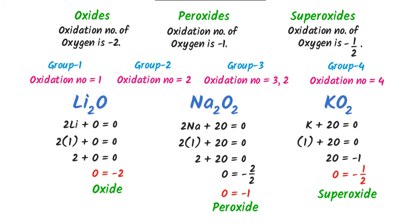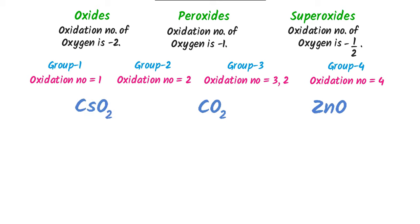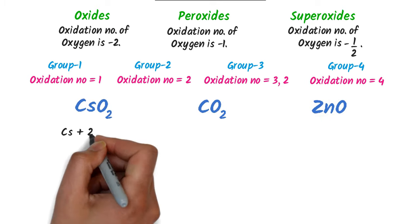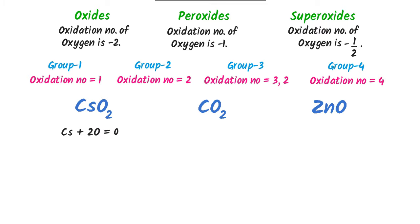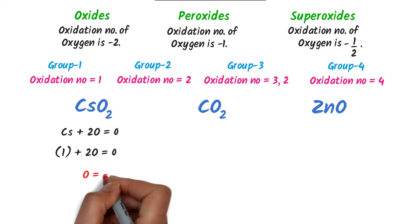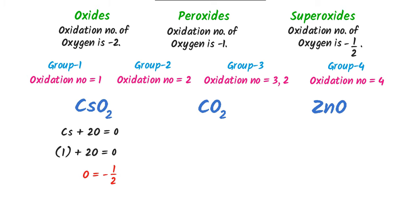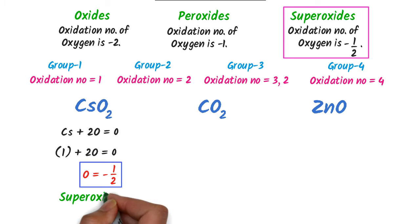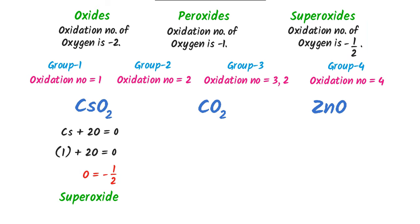Now let me teach you a medium level question: find the oxidation state of the following compounds. For KO₂, I write: potassium + 2(oxygen) = 0. The oxidation state of potassium is +1, so 1 + 2(oxygen) = 0, and oxygen = −1/2. The oxidation state of oxygen is −1/2, so this is superoxide.